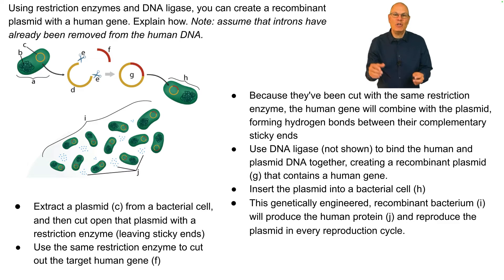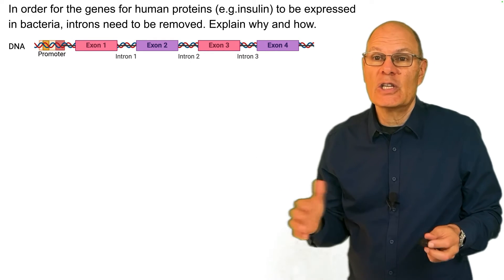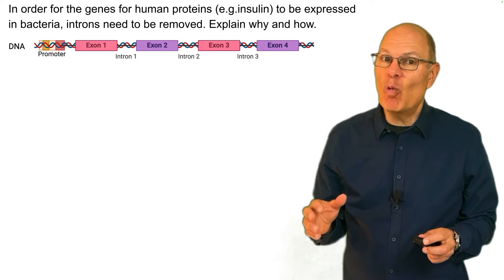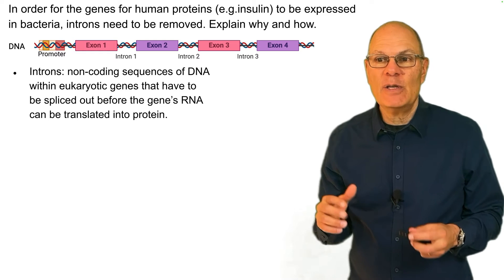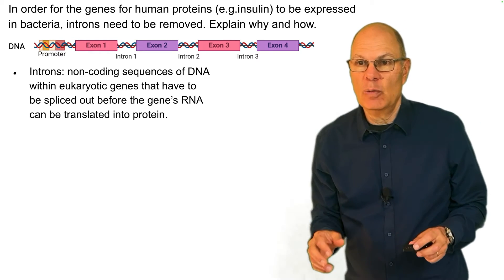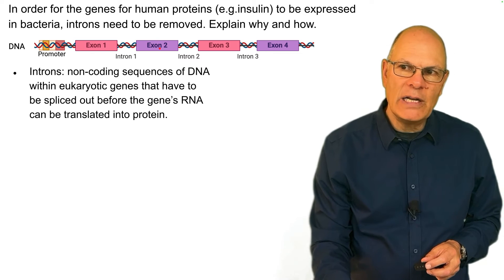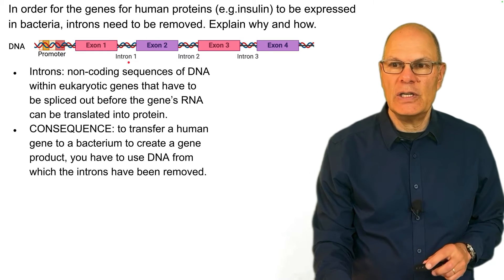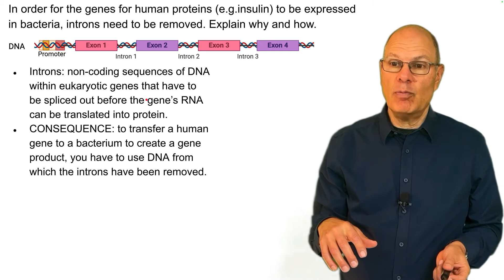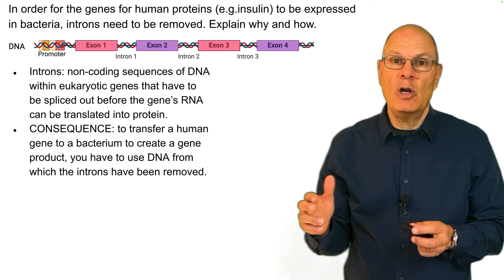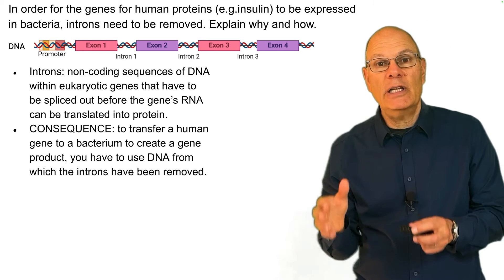In order for genes for human proteins such as insulin to be expressed in bacteria, introns need to be removed. Introns are non-coding sequences of DNA within eukaryotic genes that must be spliced out before the gene's RNA can be translated into protein. In human DNA, exons are expressed sequences separated by introns. If you transfer a human gene with introns to a bacterium, the bacteria would translate everything including the introns, leading to a non-functional protein.